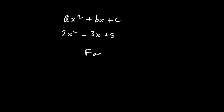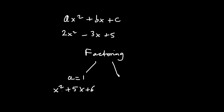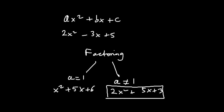There are actually two types of trinomials as far as factorization, or factoring, is concerned. The first type is where a is 1, so it becomes x squared. For example, x squared plus 5x plus 6 is an example of this type. The other type is where a isn't 1 — for example, 2x squared plus 5x plus 3. We'll start by factorizing the first type, because it's easier, and then move on to the second type.